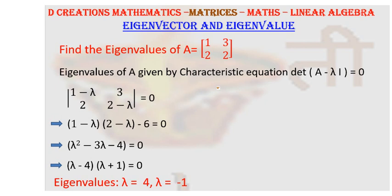But the diagonal values are now going to become lambda and lambda. So when you essentially subtract lambda I from the matrix A, you will get it as 1 minus lambda, 3 remains as it is.